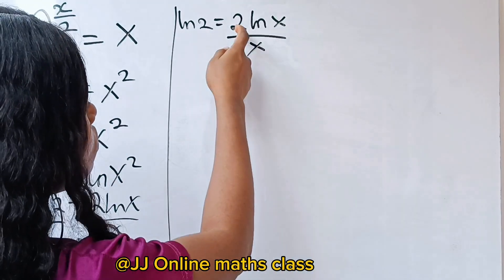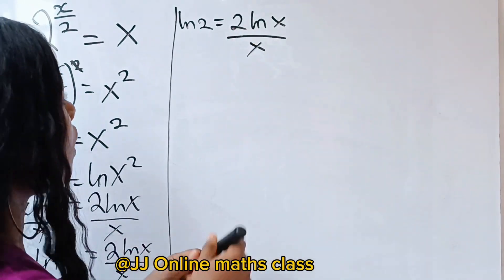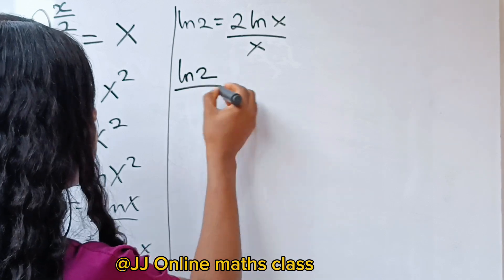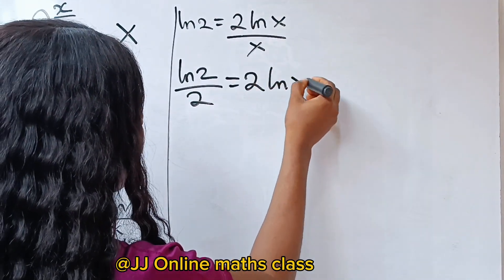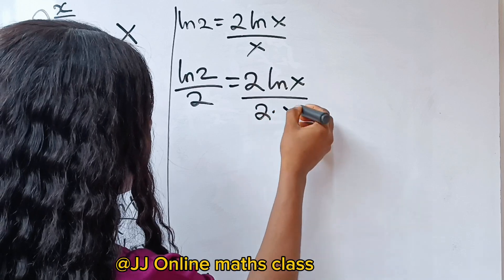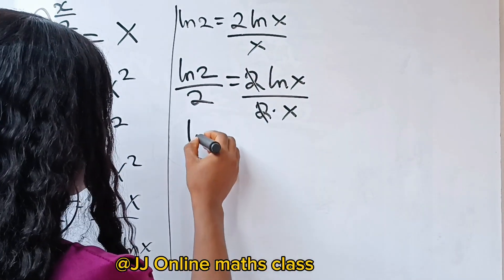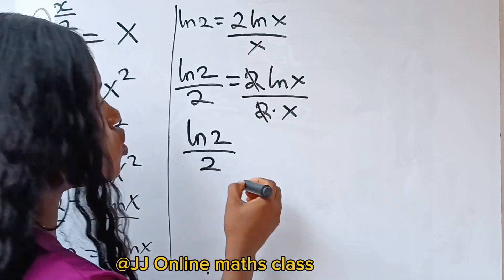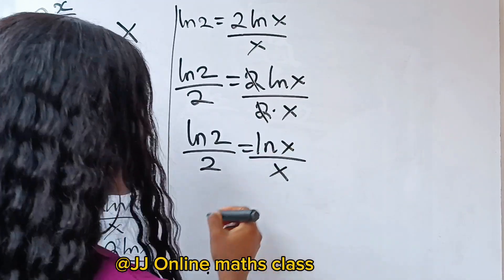So we need to remove this 2. To do that, let's divide both sides of this equation by 2. So we are going to have ln 2 divided by 2 is equal to 2 ln x over 2 times x. So these 2, we divide this. So we have ln 2 over 2 is equal to ln x over x.